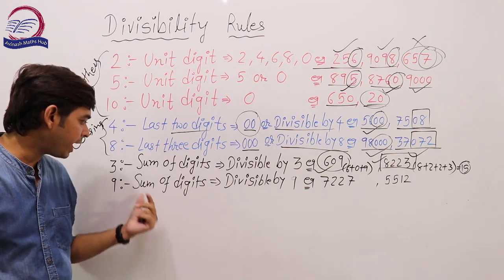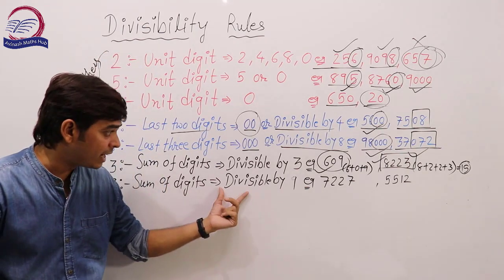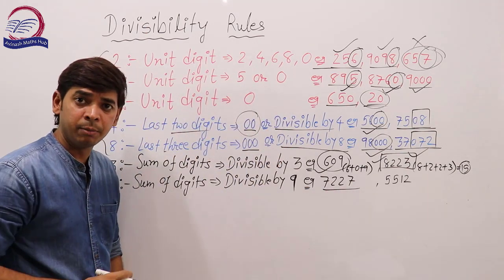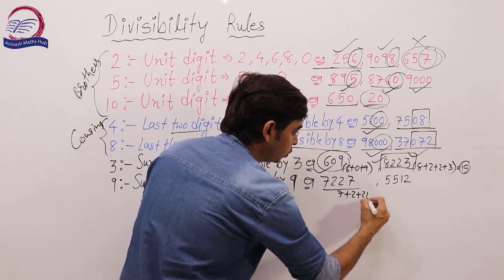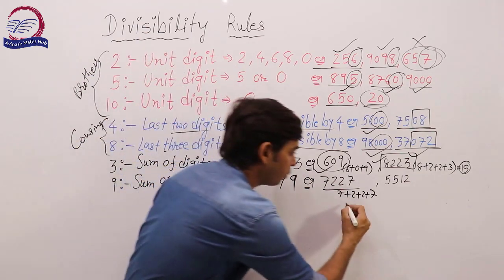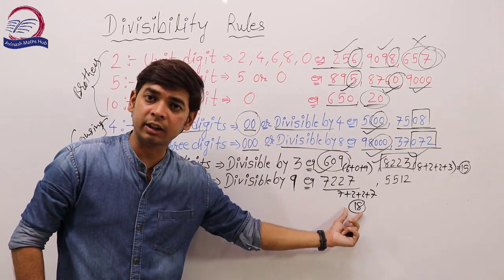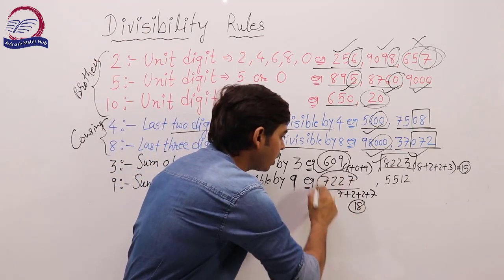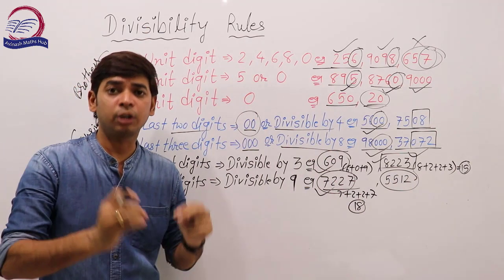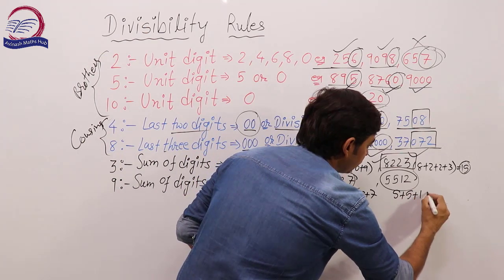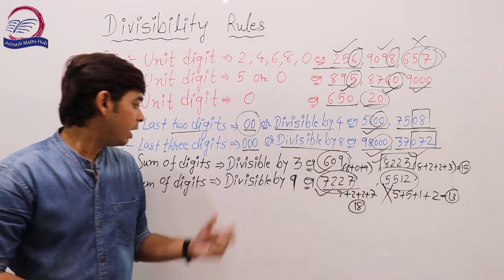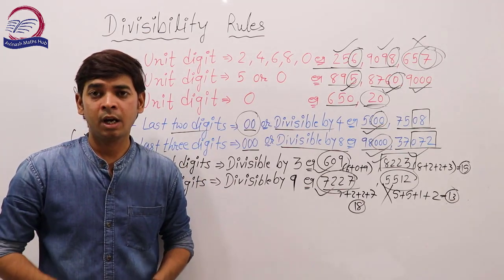Similarly, the divisibility rule of 9: a number is divisible by 9 if the sum of its digits is divisible by 9. For example, 7227: 7 plus 2 plus 2 plus 7 equals 18. Since 9 times 2 is 18, this number is divisible by 9. But for 5512: 5 plus 5 plus 1 plus 2 equals 13. Since 13 is not a multiple of 9, this number is not divisible by 9.